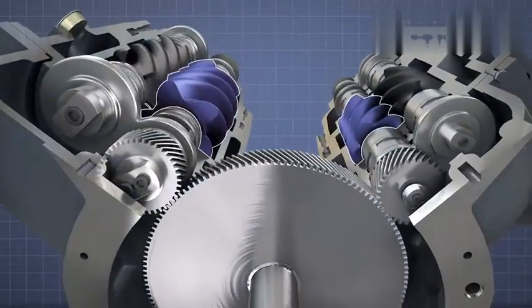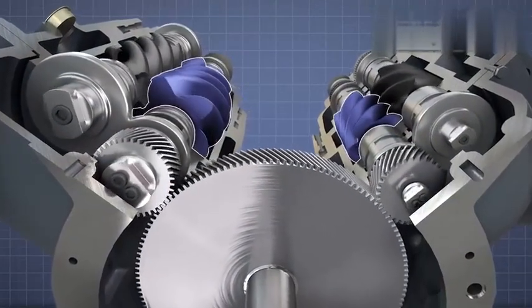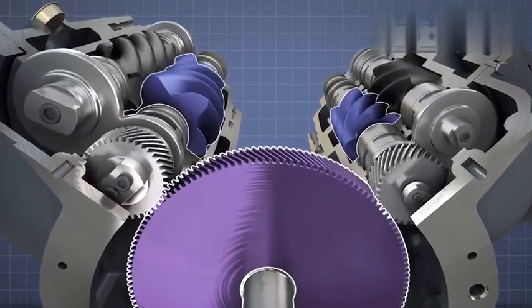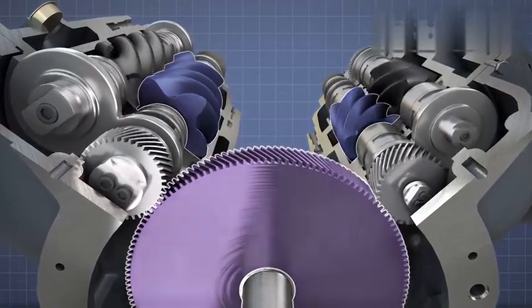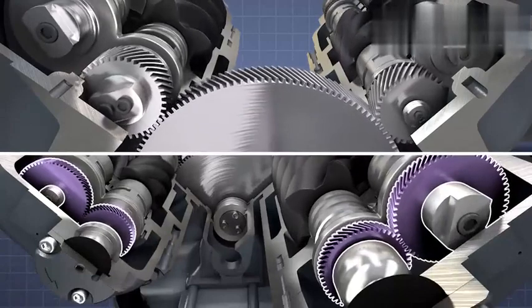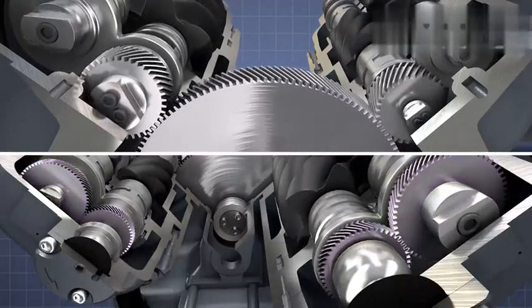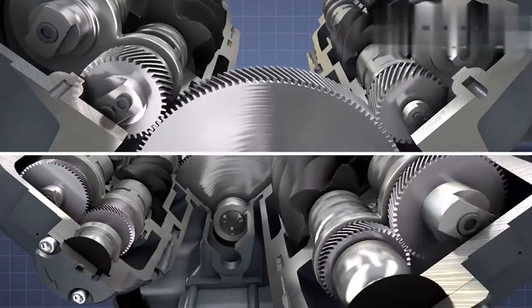The male rotors of both the first and second stages are driven by a single main gear at the back of the air end. Helical timing gears at the front of both sets of rotors ensure perfect synchronization is kept between the rotor pairs at all times.